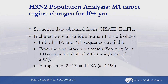I obtained sequence data from the Global Initiative for Sharing All Influenza Data (GISAID) EpiFlu database. I looked at all unique H3N2 isolates that had both an HA and a matrix-1 gene sequence available, so I could correlate clade type with what I was seeing in the matrix gene. I examined these viruses over more than a 10-year period in the winter months, looking at thousands of viruses. The subsequent slide shows just the U.S. data.